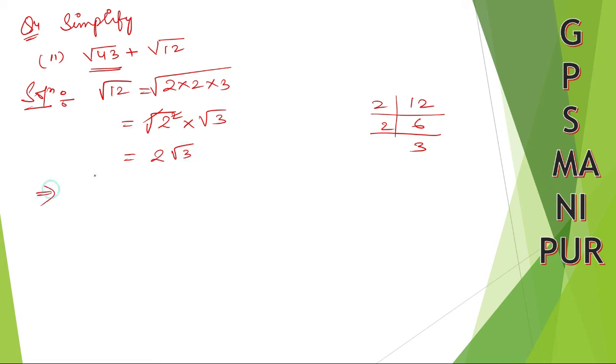How can we write the answer? Let me write it down. √43 + √12 can be written as... wait, wait - √43 + 2√3.